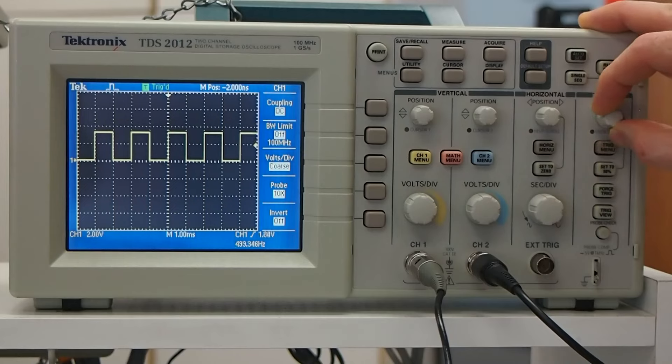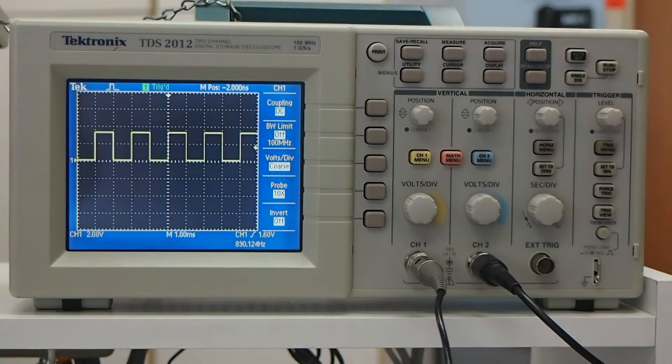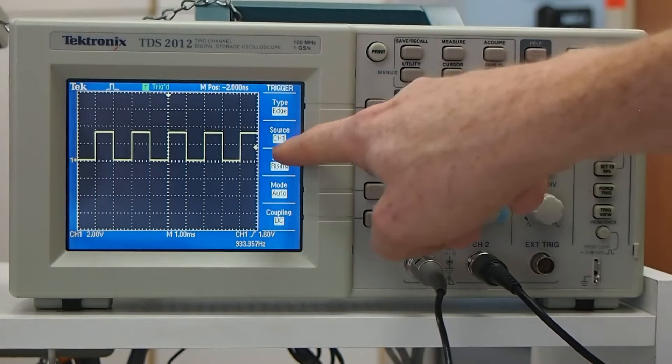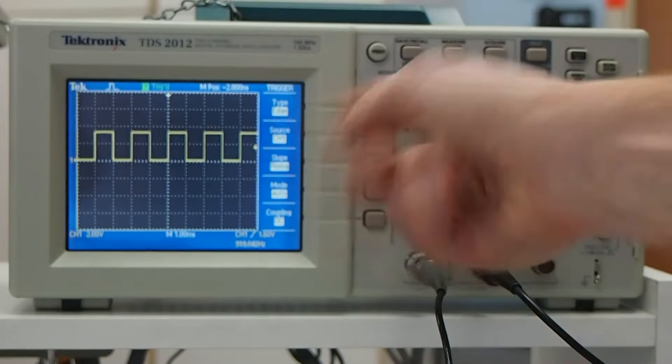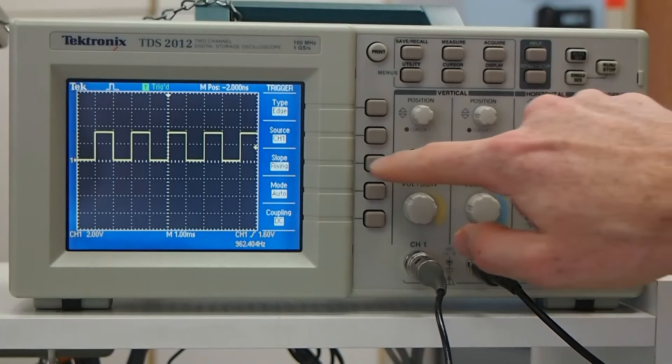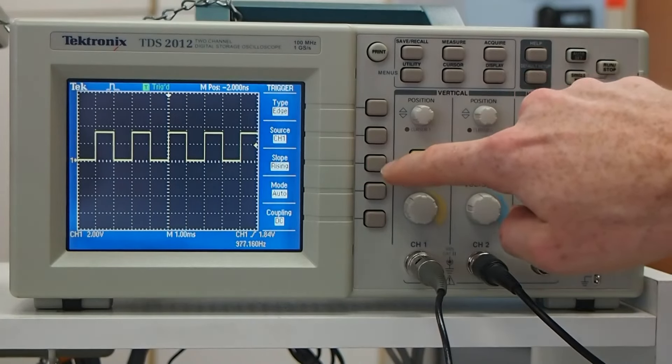So if we put that here, just sort of in the middle of our signal, you can use the trigger menu to control what kind of transition it's looking for. So here we're triggering on an edge for channel one. If we'd switch to channel two, we might have to reconfigure that to point to channel two. Here it says the slope is the rising edge, so I can push that again, and now it will trigger on the falling edge.